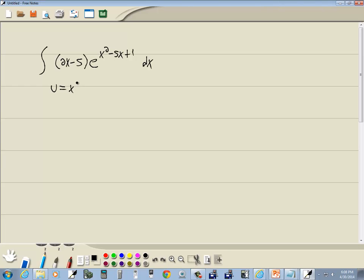It doesn't mean it'll work, but you try it. So u is equal to x squared minus 5x plus 1. The derivative of that would give us 2x minus 5, and then we have to tack on our dx.